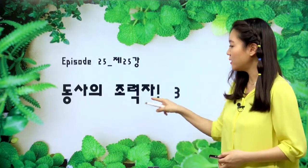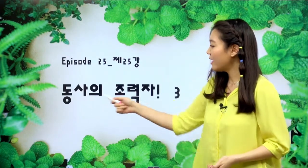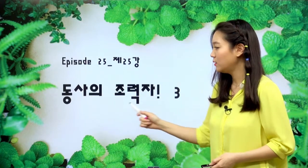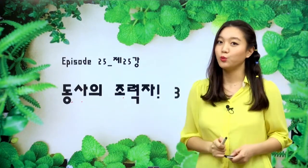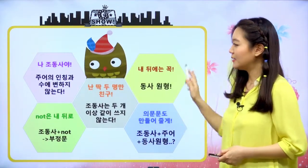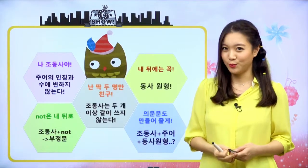우리 지난 시간에 동사의 조력자 No. 2에 대해서 배웠고, 오늘은 그 세 번째 시간을 이어나가 보도록 할게요. 동사의 조력자는 도와준다는 뜻이고, 동사의 조력자면 동사를 도와주는 아이, 즉 조동사였죠. 계속 이어서 오늘 조동사에 대해서 공부를 해보겠습니다. 조동사의 특징 다섯 가지, 우리 친구들이 잘 알고 있는 것들을 다시 한번 짚고 넘어가 보도록 할게요.